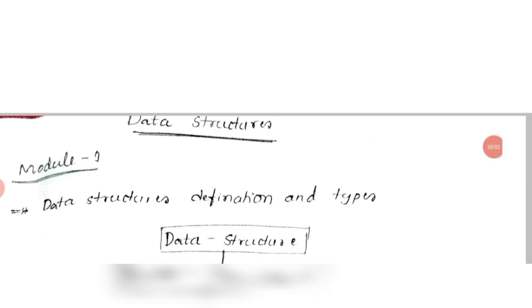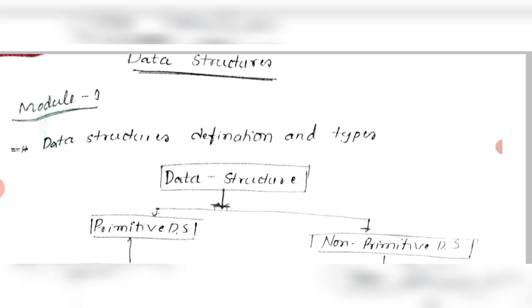Here is the strategy to score 60 to 70 marks in data structures, 18 CS 32. In module 1, you have to study these topics. If you go through these topics and study them easily, you can score 20 out of 20.